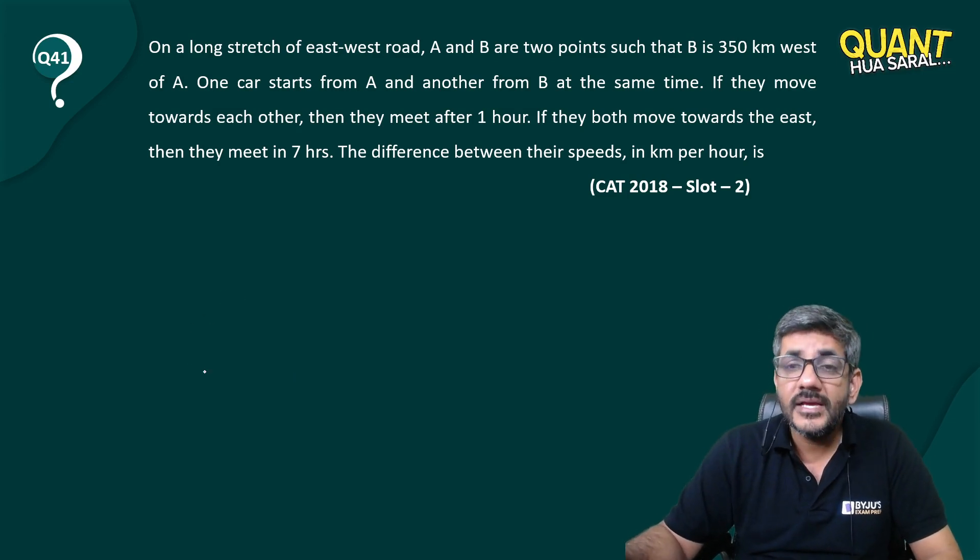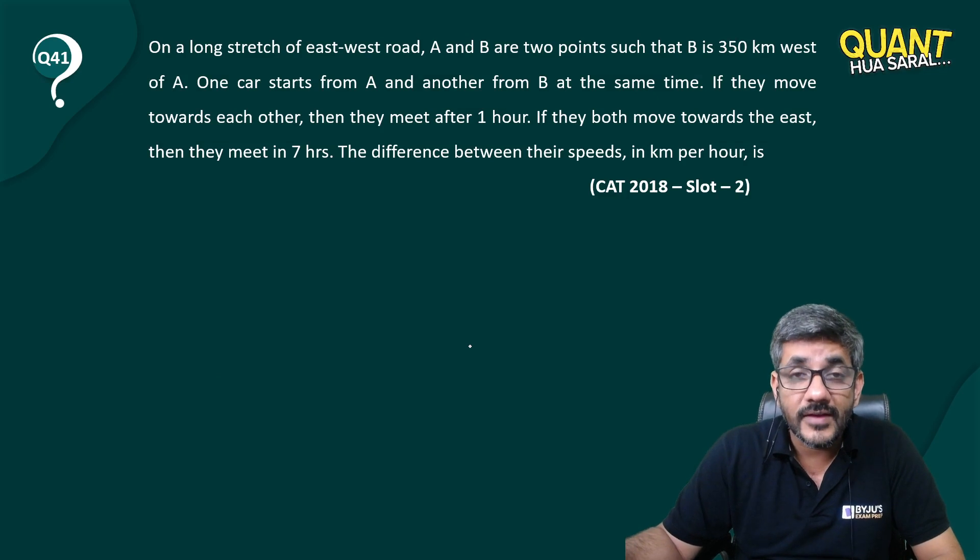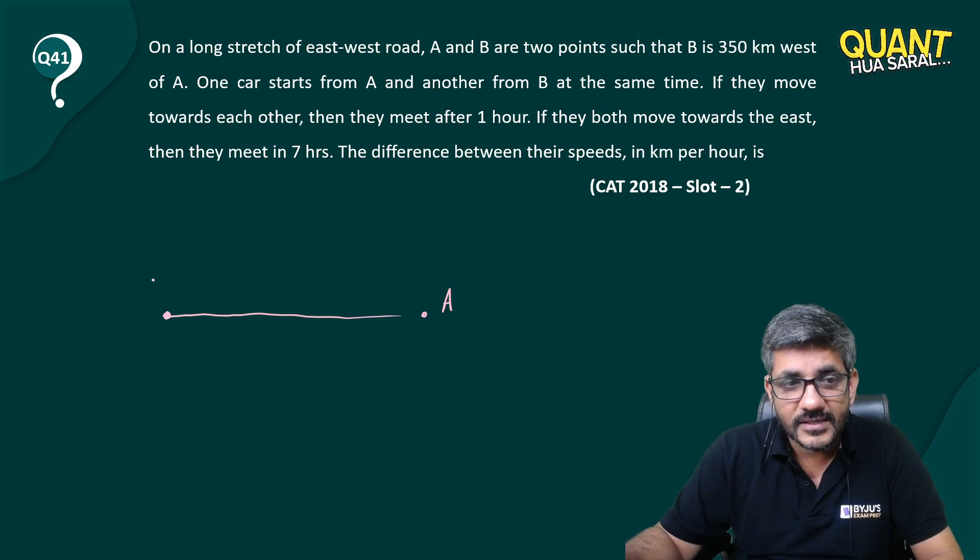I'll just try to make it. He says that B is 350 kilometers west of A, so east is on this side. Let's call this point as A and B is 350 kilometers west of A. So these are the two points, they are 350 kilometers away from each other.